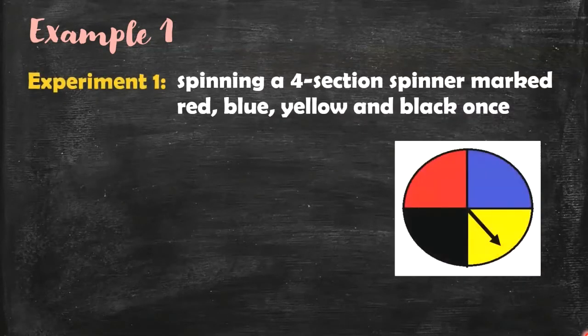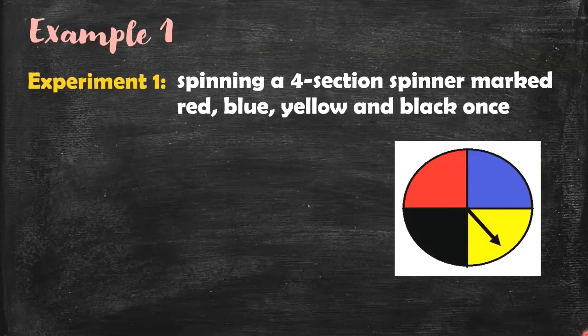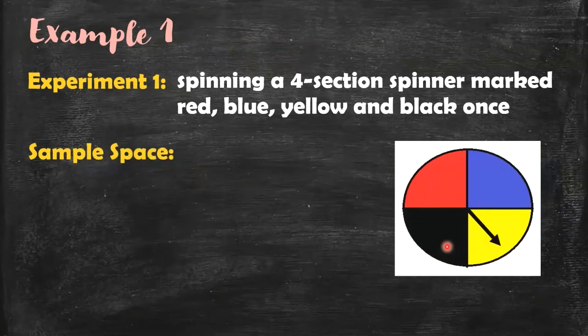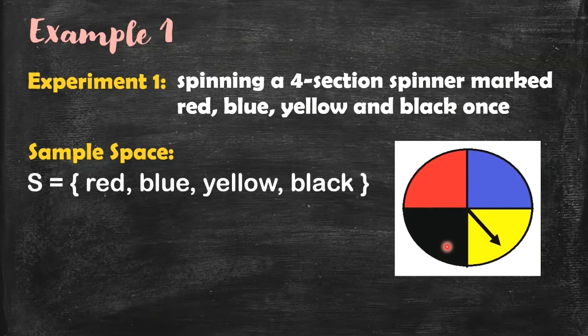The first experiment is spinning a four-section spinner marked red, blue, yellow, and black, and we're going to spin it once. So that's the first experiment.